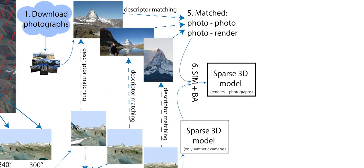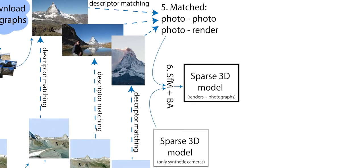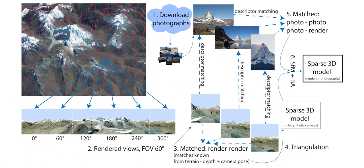In the fifth step, we use a pre-existing feature descriptor, D2Net, to extract key points and descriptors from downloaded photographs, which are matched to each other and also with the renders. This allows us to localize the downloaded photographs into the 3D point cloud as the sixth step. Note that photo-to-photo matching is important to successfully localize images which have no direct matches with the terrain. While parameters of localized photographs and 3D points are optimized during the structure-from-motion step, parameters of rendered cameras are fixed since they are already known.